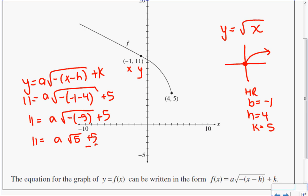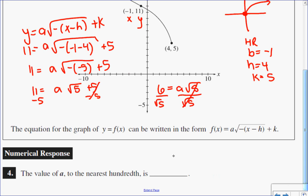So to get to a, I'm going to subtract 5 from both sides. 11 take away 5 is 6. And then to solve for a, I would just simply divide both sides by root 5. So I know that a is equal to 6 over root 5.